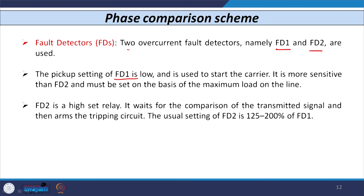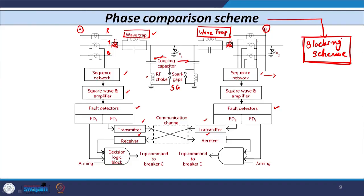The setting of FD1 is lower than FD2 — FD1 is set based on the full load current of the line and is more sensitive. FD2's setting is 125 to 200 percent of FD1, and there is a timer connected with FD2. FD1 operates immediately as soon as the current exceeds full load current, whereas FD2 operates only once the timer period is completed.